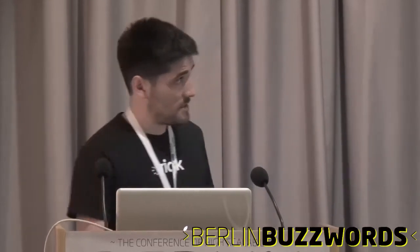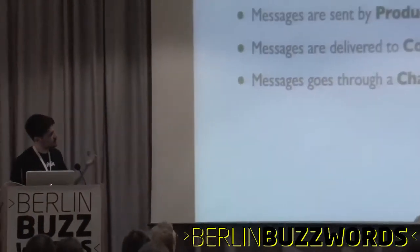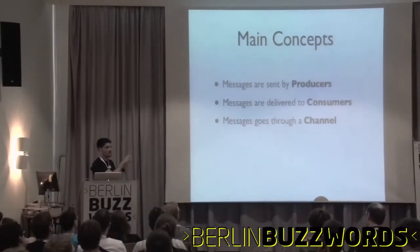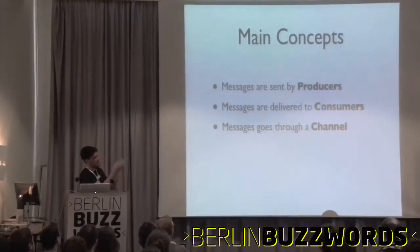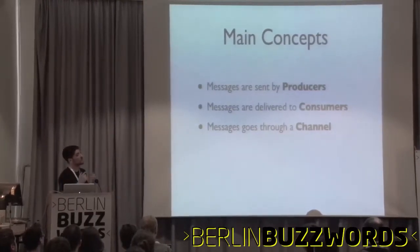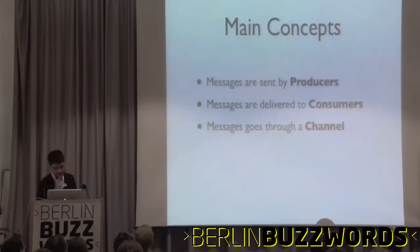There is no such thing as a synchronous method call in messaging — we can fake one, but there is no such thing. We actually don't even know if the message arrived at the other end. We can have confirmations and so on, but we really need to wrap our heads around the asynchronous nature of all this. The main concepts are that messages are sent by producers, delivered to consumers, and sent over a channel. Depending on which messaging solution you use is what each concept will be.